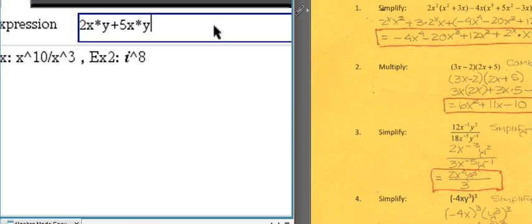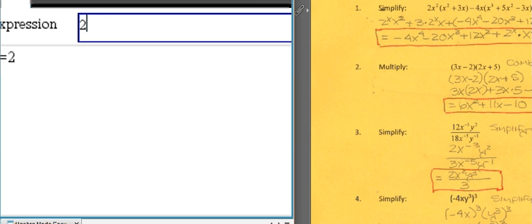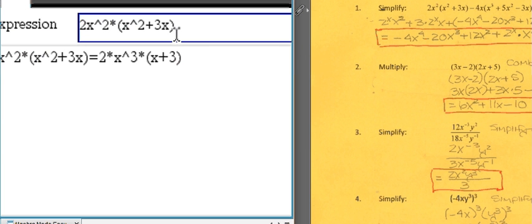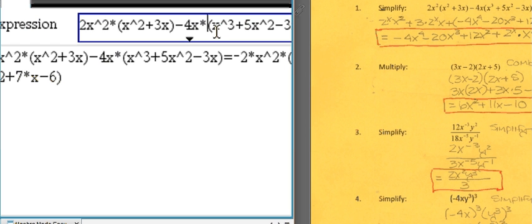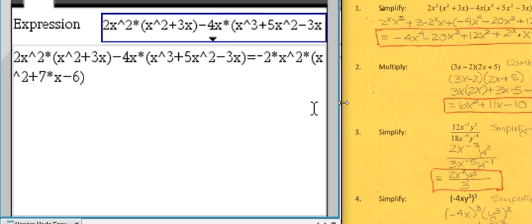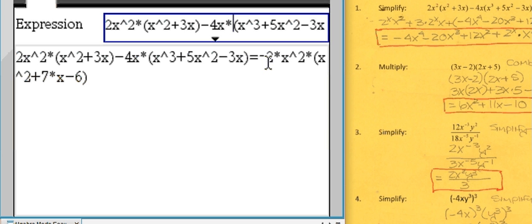We enter all of this here, so let's do that: 2x² times (x² + 3x). While I enter this, we can already see how the first part was simplified. We continue minus 4x times (x³ + 5x² - 3x). There's got to be a multiplication sign before the parentheses, and if I expand this here a little bit, we can see the full solution, the complete answer.